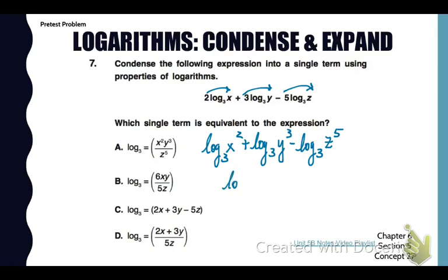So you'll have 1 log base 3 and then x squared times y cubed, because those two are multiplied since they're added, and then all divided by z to the 5th. So the choice we're looking for is choice A.